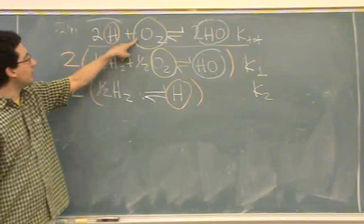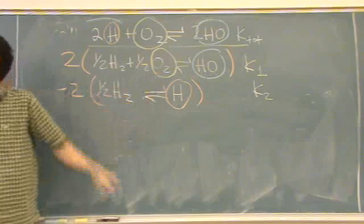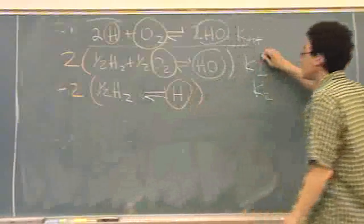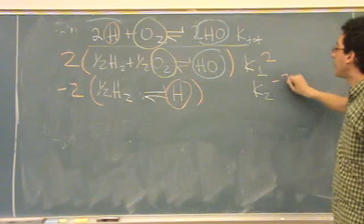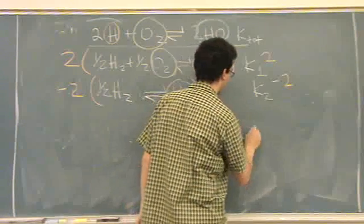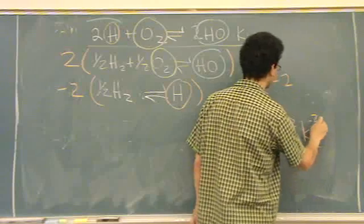And then now if you look at the O2, there's one in the reactant here, and two times one half, there's one in the reactant here. Okay, if I multiply this by two, what happens to K1? Square. And this one would be minus two. So K total is just K1 squared times K2 to the minus two.